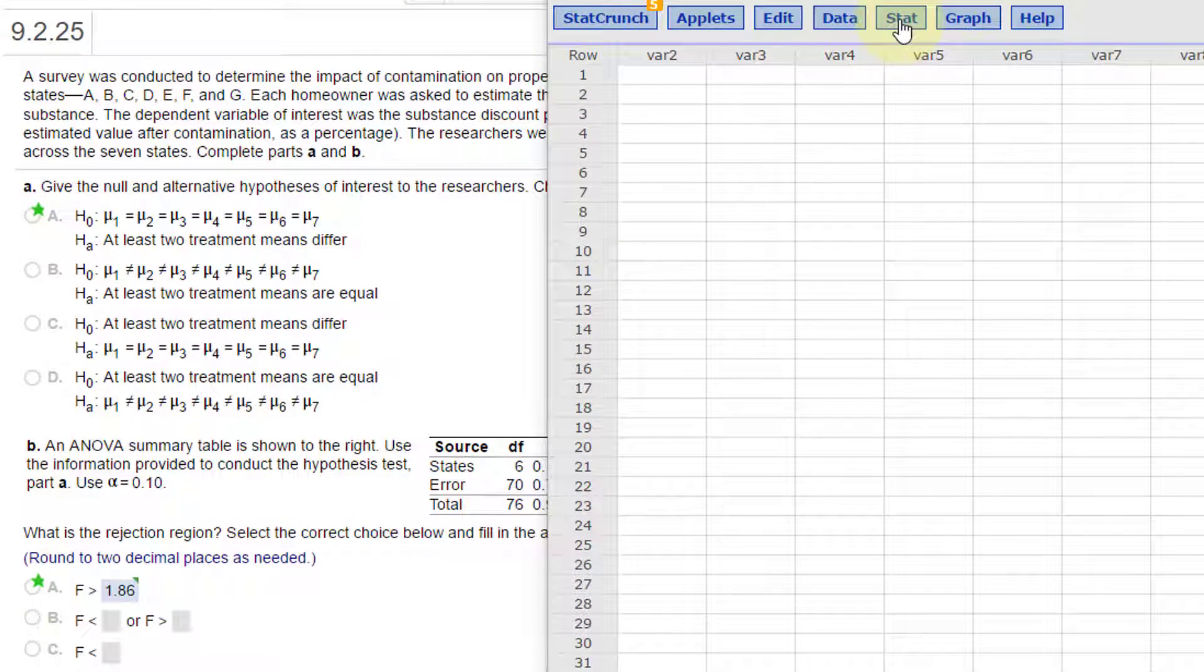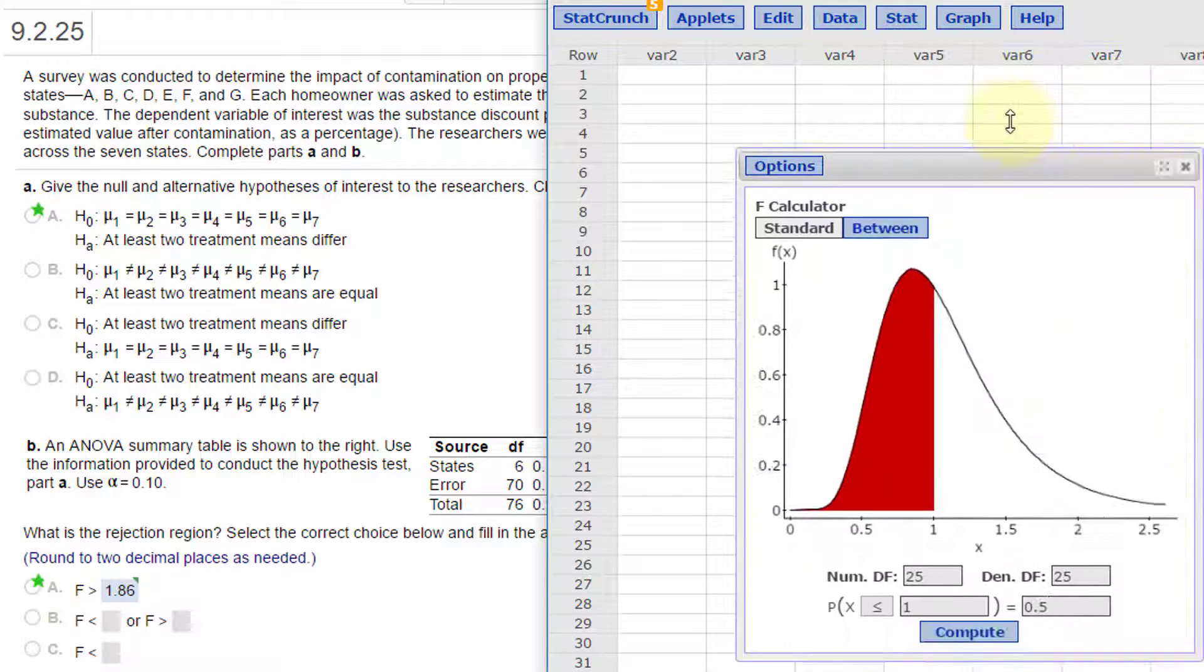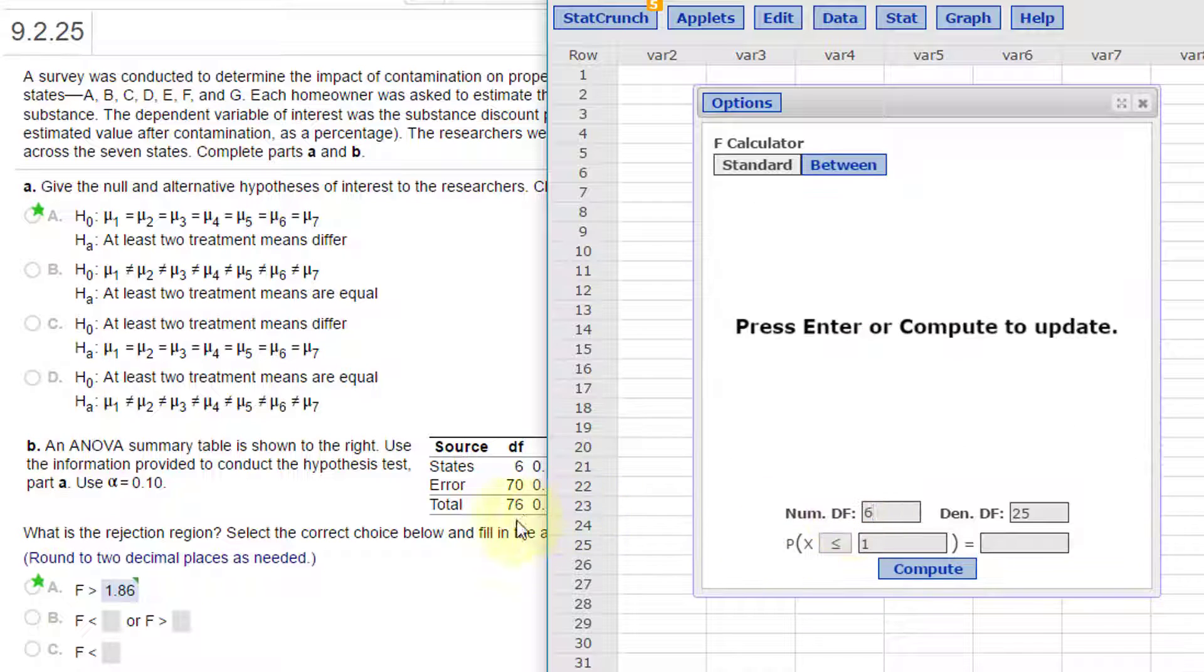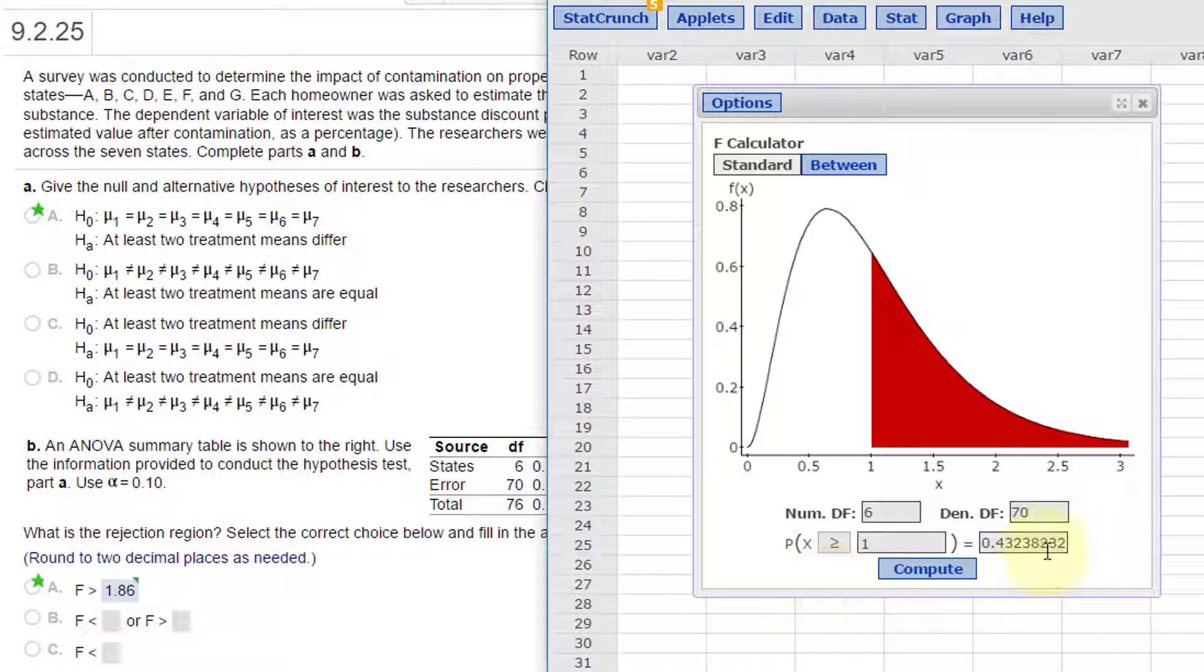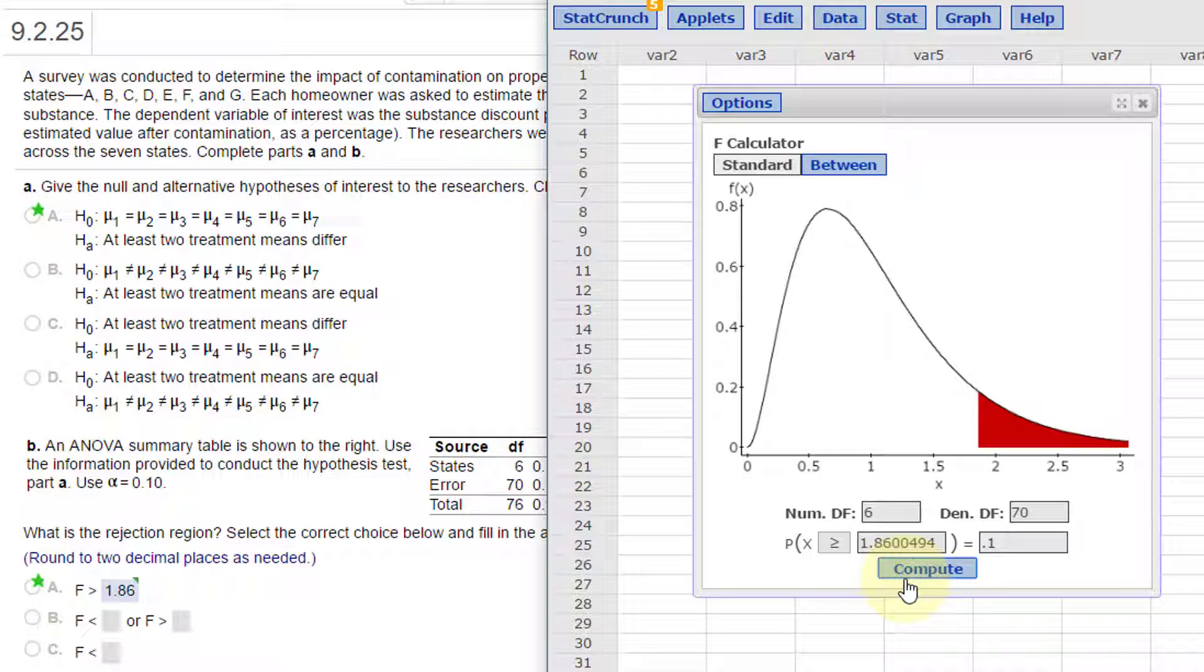I have StatCrunch, and for the F distribution we go to Stat > Calculators > F to bring up the dialog box. As I said, the first value for states, the categorical variable, is 6 - that's the numerator. The error is the denominator, and we always want the right tail. We're given 0.1 for the probability (our alpha). Click on compute and we get 1.86.